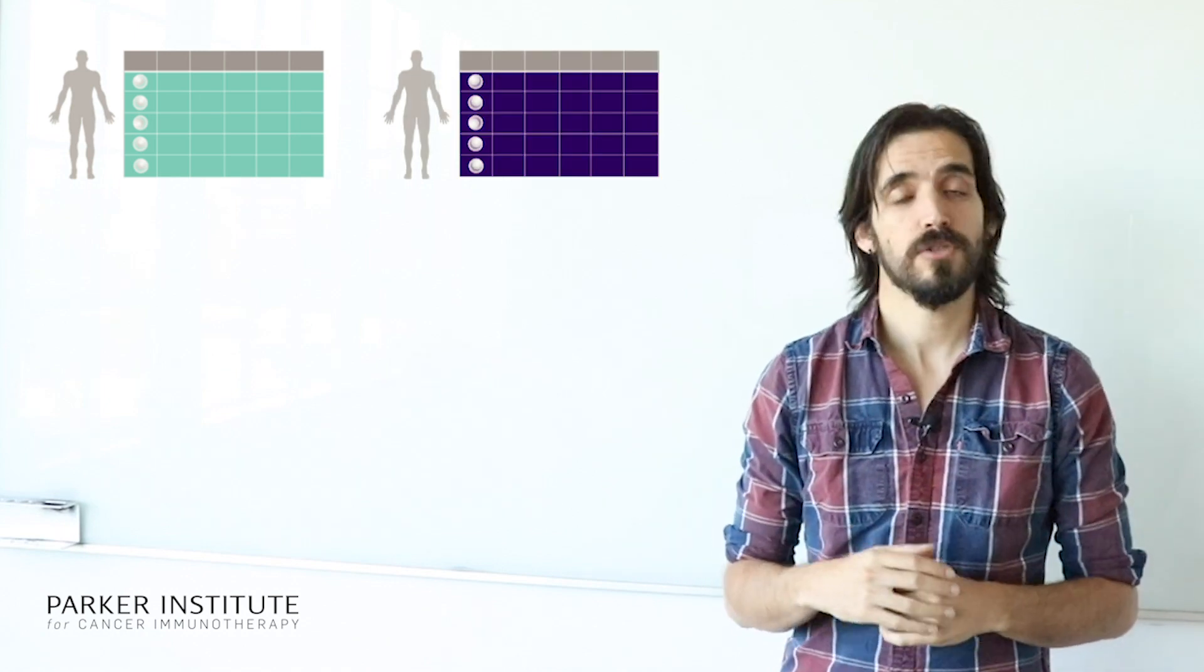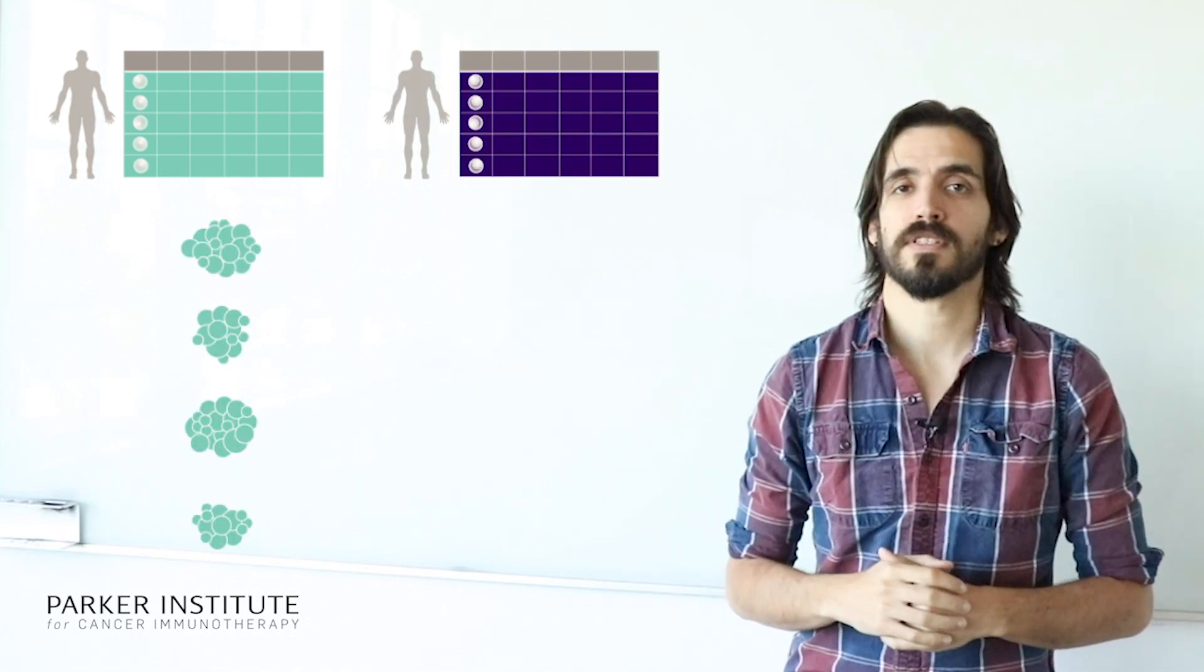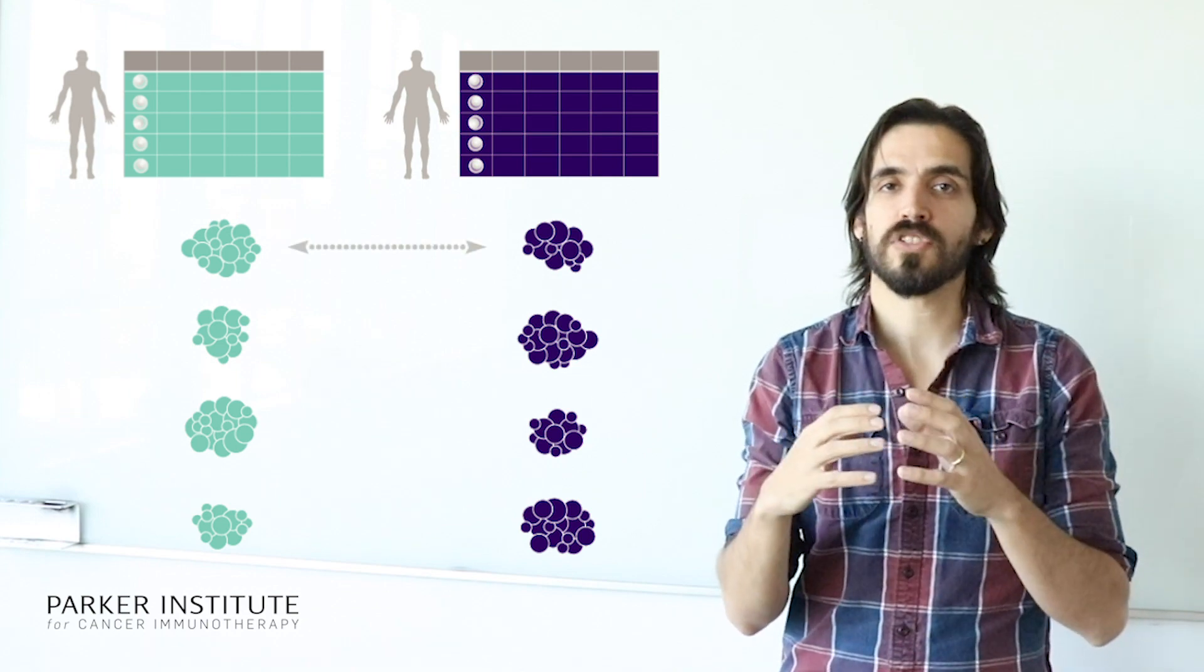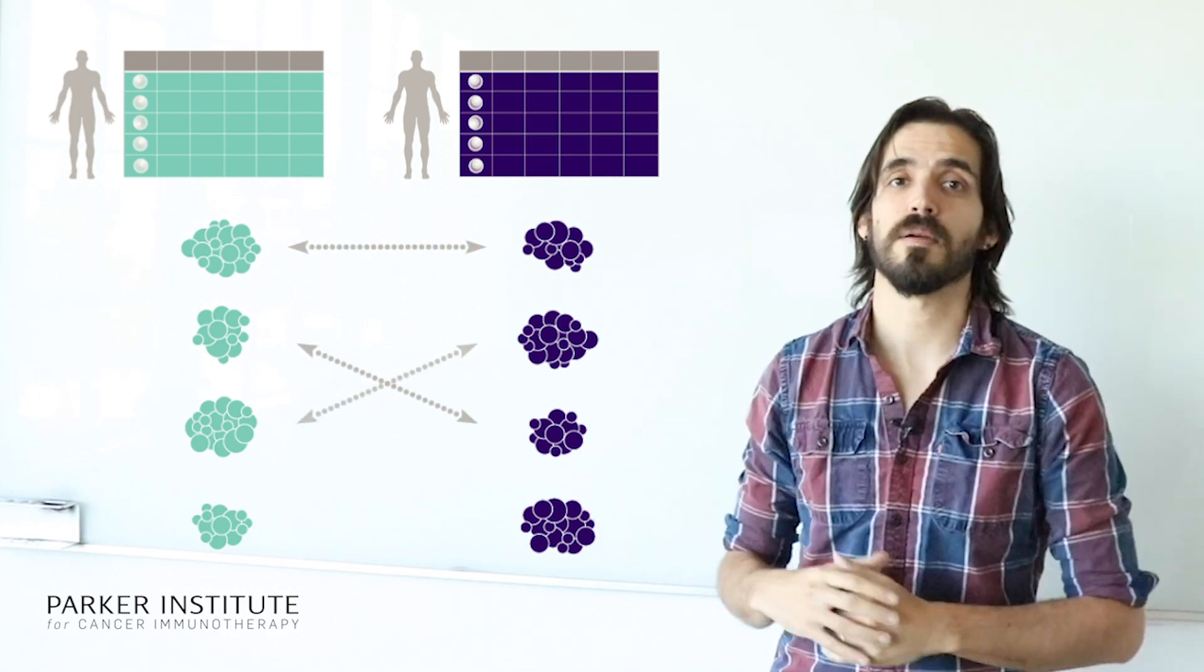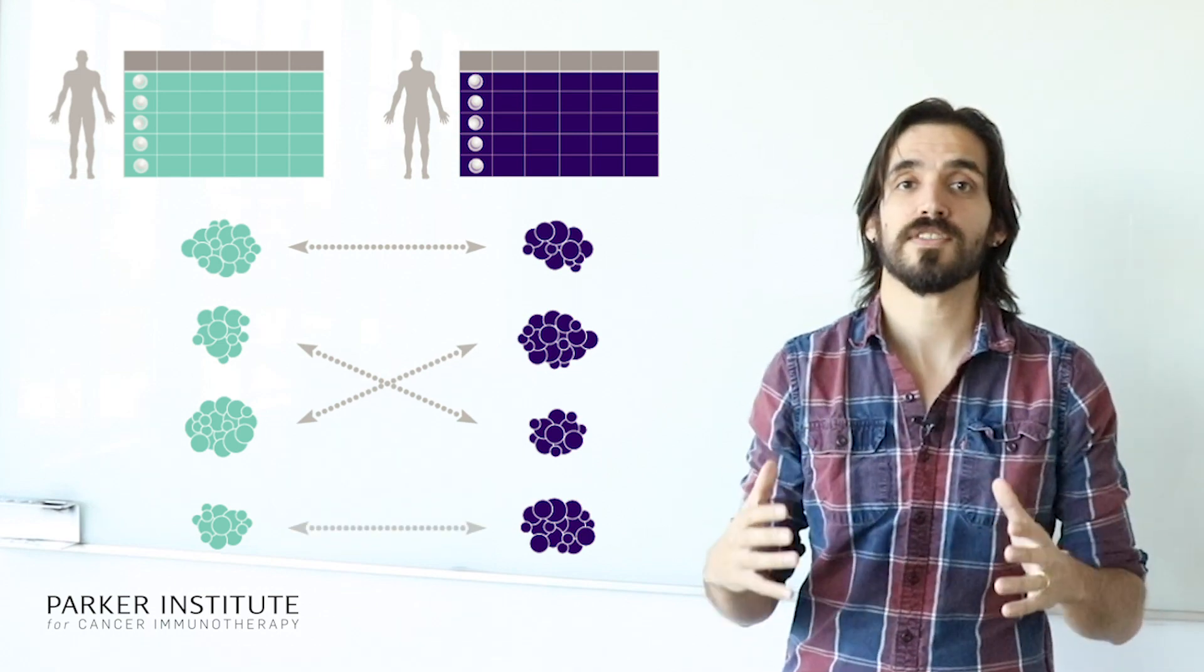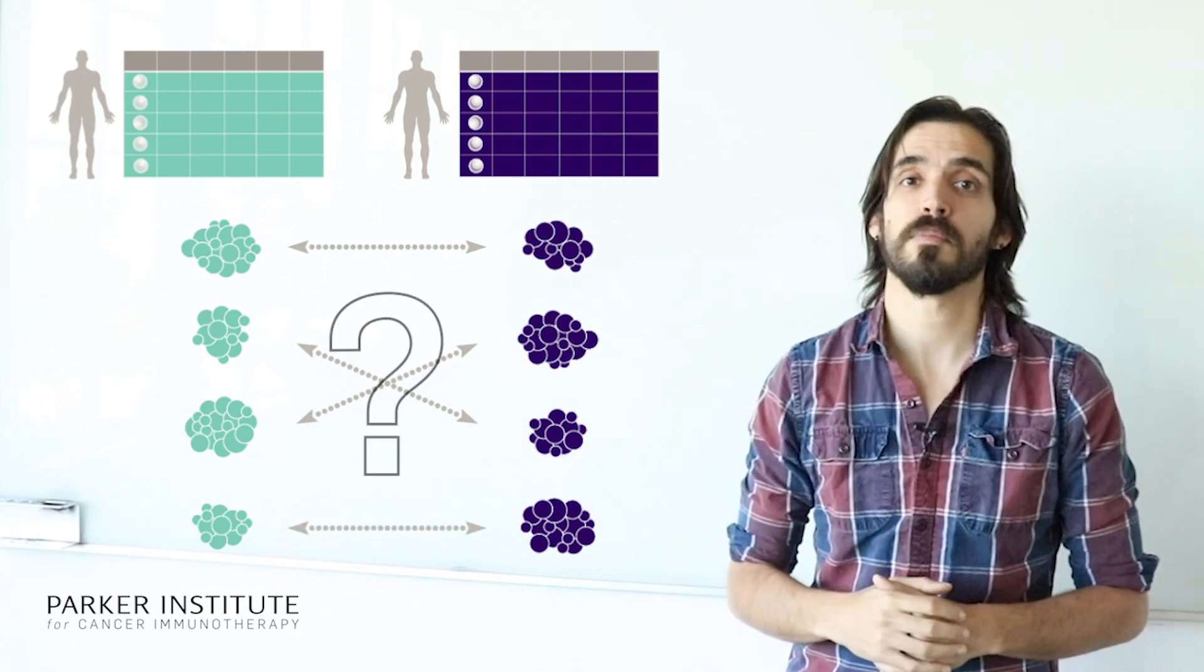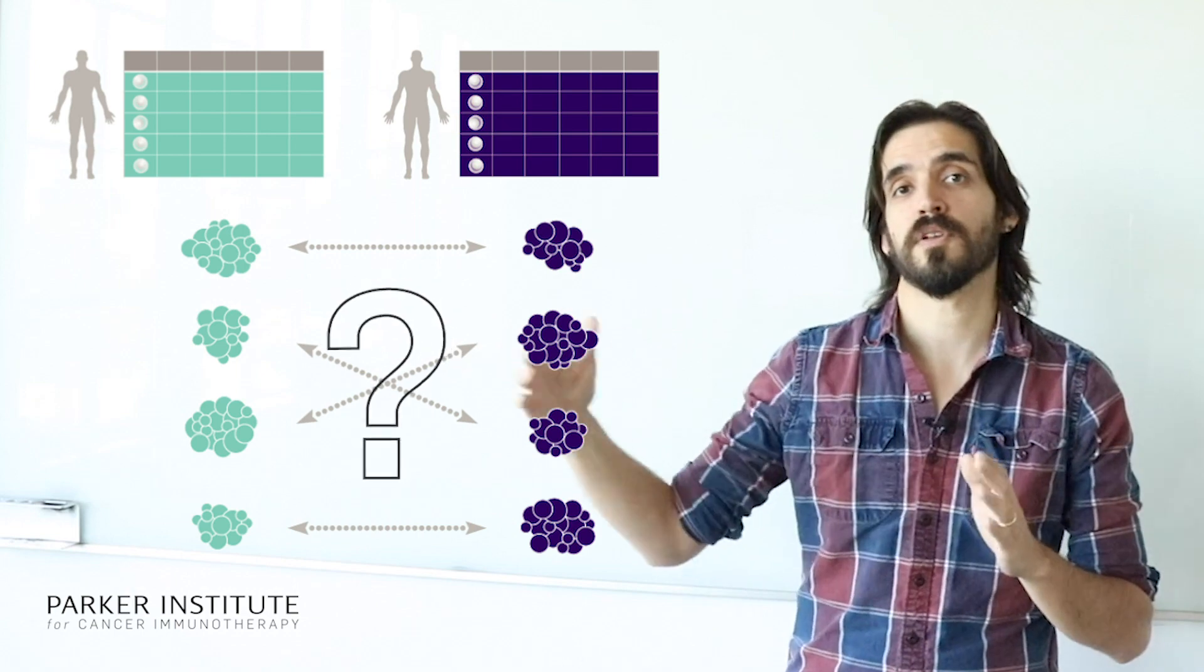If you do not do things this way, and instead you cluster each sample individually, then you are not going to be able to construct the matrix that I was showing before, because you will not be able to associate one cluster in one sample with another cluster from another sample, because all of these clusters have been defined independently for each sample, and therefore, there is no correspondence between them.